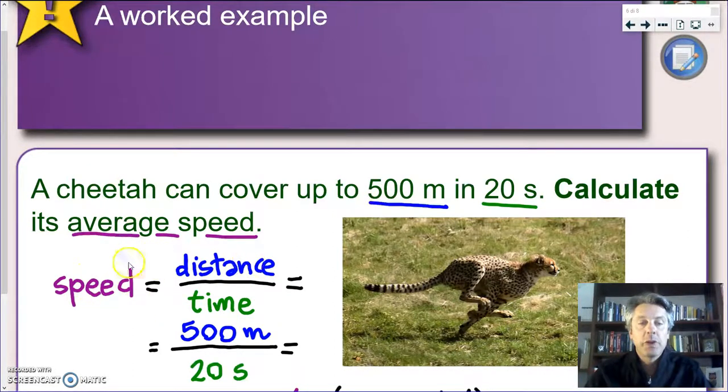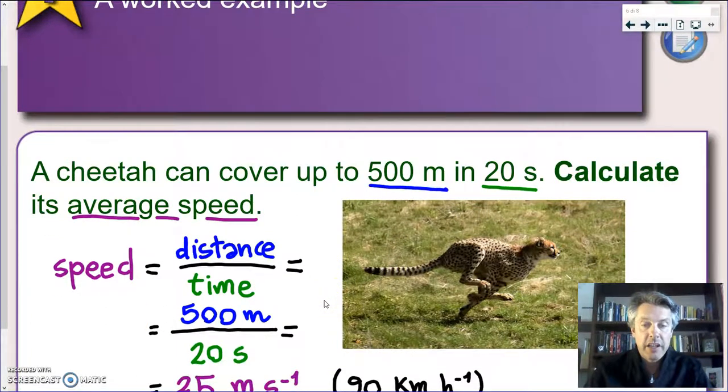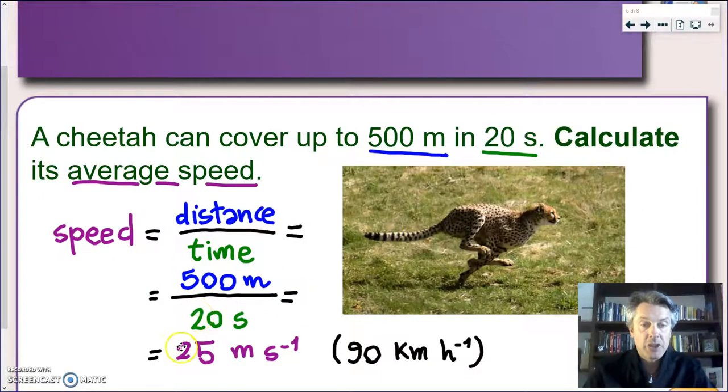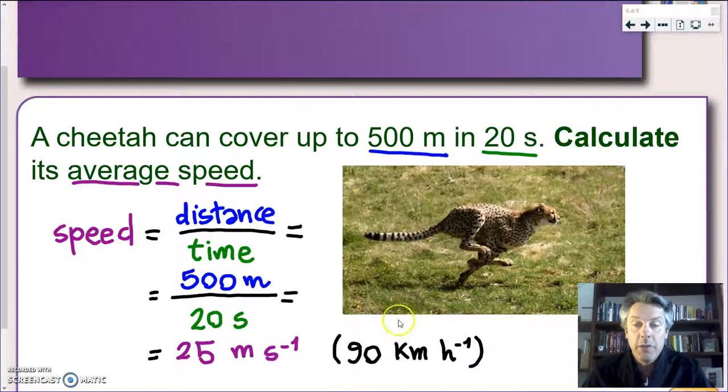So what we're going to do, we're going to rewrite the formula - something I strongly encourage you to do every time. So speed equals distance divided by time. I look at my problem - where is the information? So distance, where is the distance? There it is, 500 meters, and I write it here. How about the time? There it is again, 20 seconds. And at this point I can do my division. And not surprisingly I'll take a value which is 25 meters per second, which corresponds to an astonishing value which is 90 kilometers per hour.